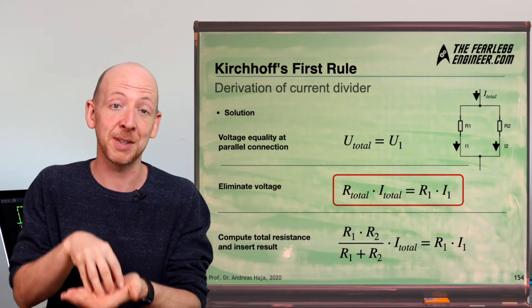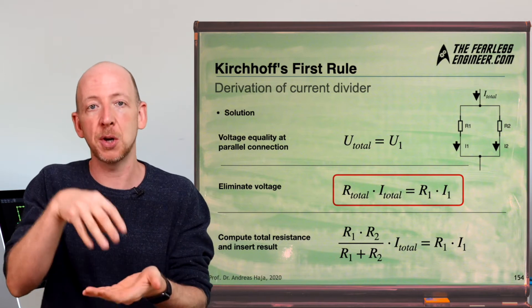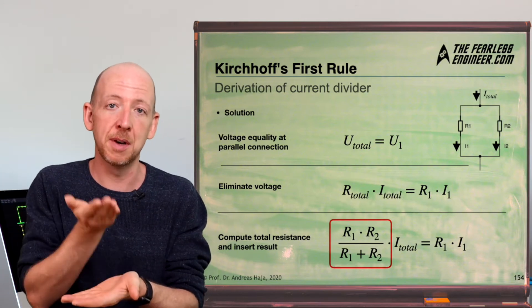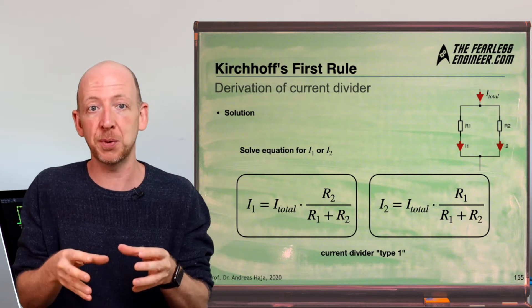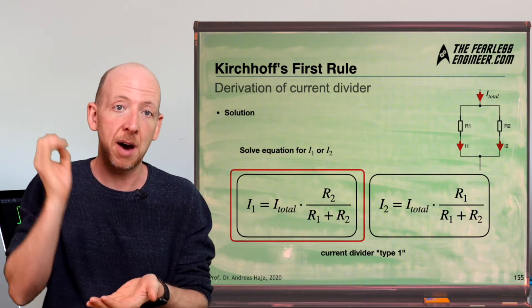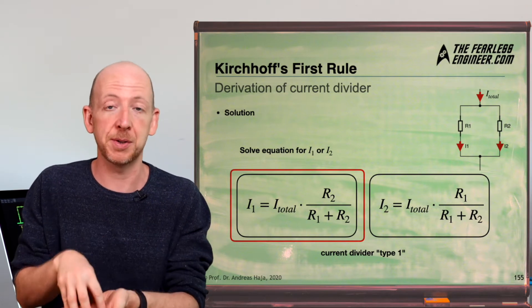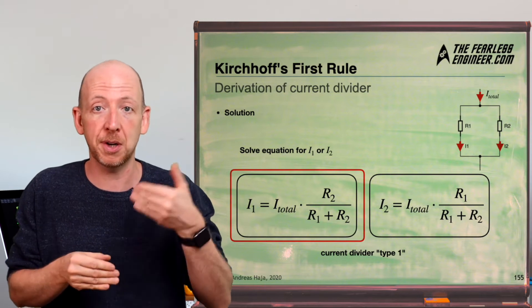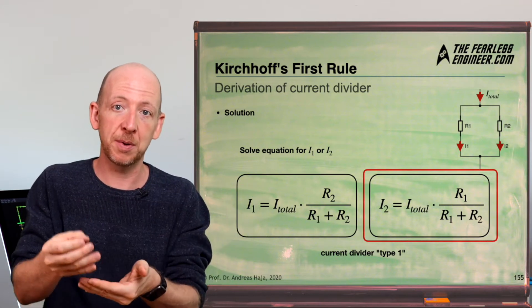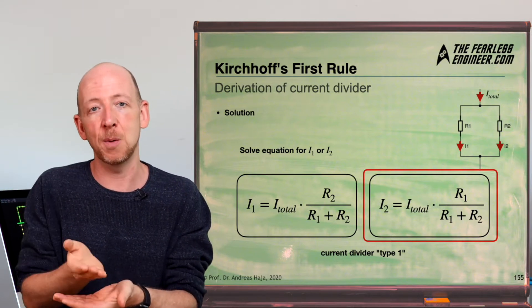The only unknown is R_total, but from Kirchhoff's first law video we know the total resistance of two parallel resistors is R1 × R2 divided by R1 + R2. Substituting this expression for R_total and dividing both sides by R1, we get the first version of the current divider rule: I1 = I_total × R2 / (R1 + R2). For partial current I2, we simply replace I1 with I2 and R2 in the numerator with R1, giving I2 = I_total × R1 / (R1 + R2).